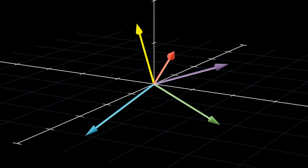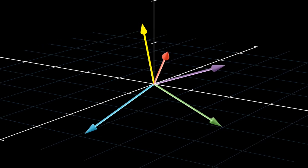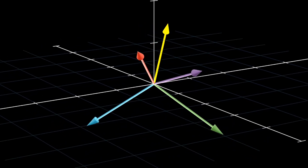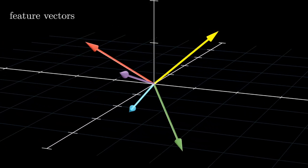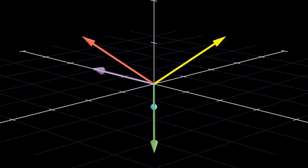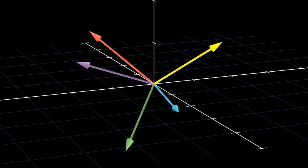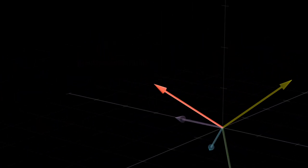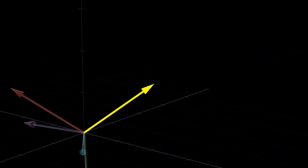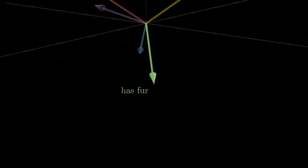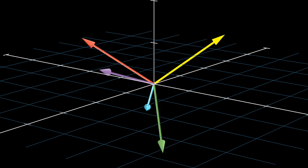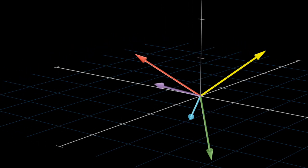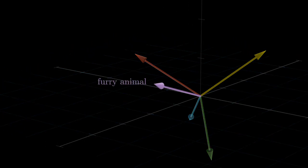Now let's move our straws into the high dimensional space where each straw becomes a vector that points in some direction. In this video, we'll call each vector a feature. Here we define a feature as a pattern the network has learned to recognize from training data, like positive sentiment, warm color, or has fur. In this toy setup, we'll think of each feature as a direction in activation space. For example, the word dog might activate a furry animal feature.